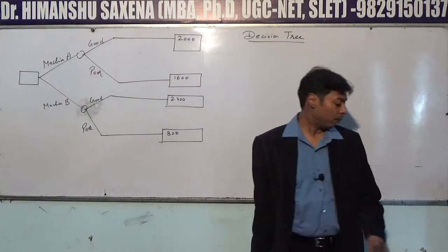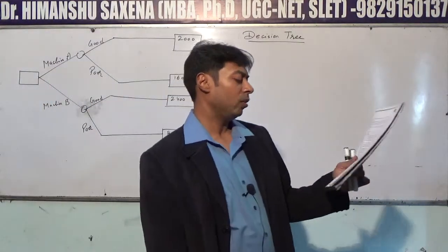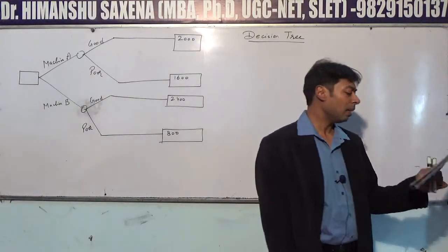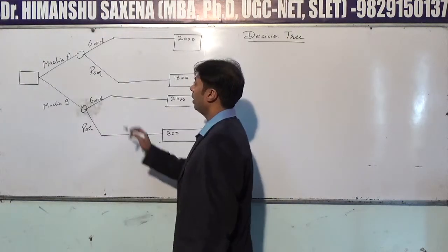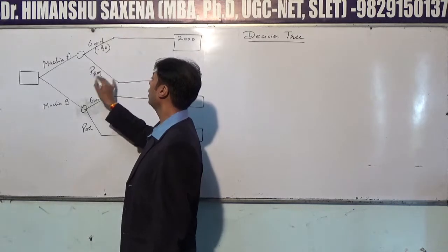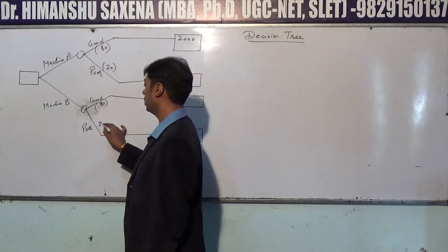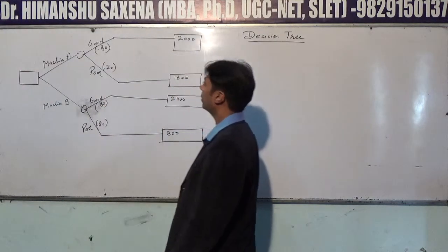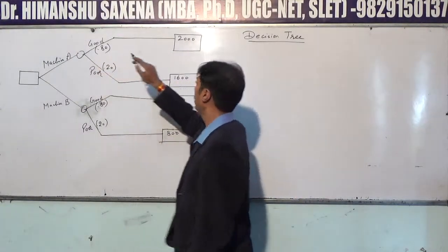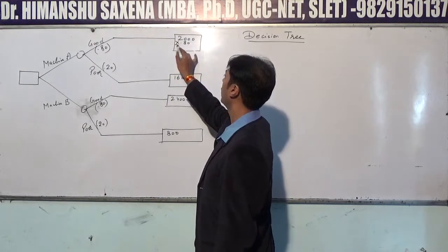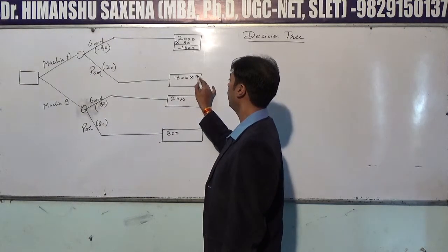The probability of good quality raw material is 0.80 and the probability of poor quality raw material is 0.20. Now we multiply the profit values with their respective probabilities. For Machine A: 2,000 × 0.80 and 1,600 × 0.20.